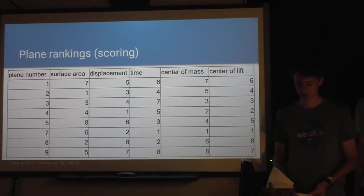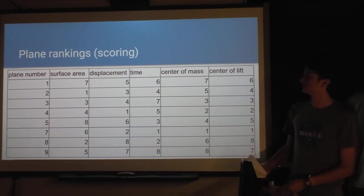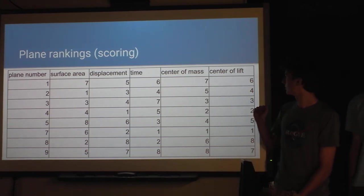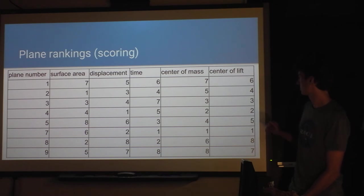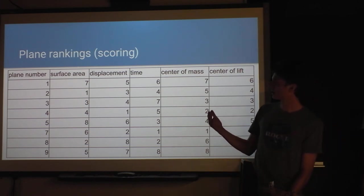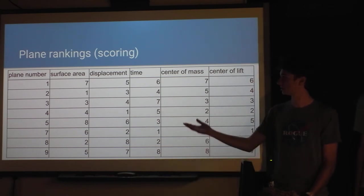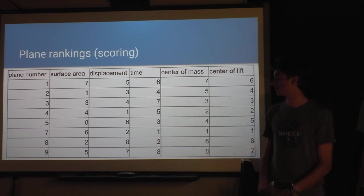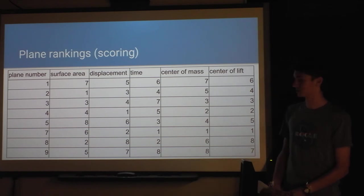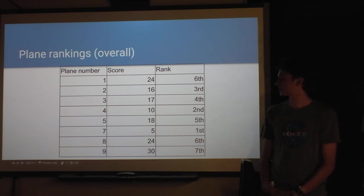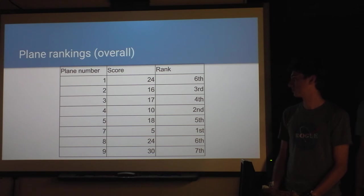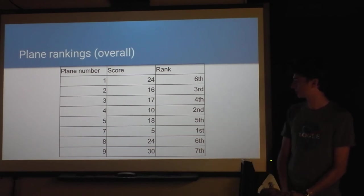So then we actually tried to rank the planes to get more scientific data stuff. On the far over there, we have the plane number. The lowest number is the best. Like a goal. So the plane that had the smallest surface area has the smallest number. The plane that has the biggest displacement, went the farthest, has the smallest number. And so on, with the center of mass and all this stuff. And so then we just added them all up. And so the planes that had smaller numbers were deemed better. So seven and four were the best planes using our ranking system.